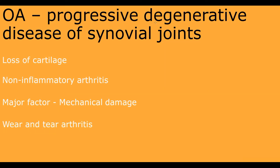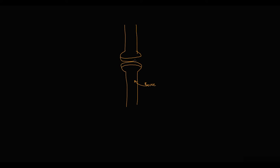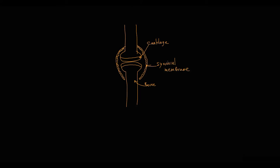Osteoarthritis is a progressive degenerative disease of synovial joints, and the most characteristic feature of osteoarthritis is loss of cartilage. Synovial joints are composed of bones covered by cartilage and surrounded by an articular capsule, whose inner lining is the synovial membrane. So synovial joints have three major structural components: bones, cartilage, and synovium.